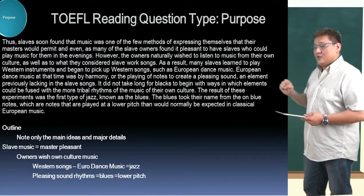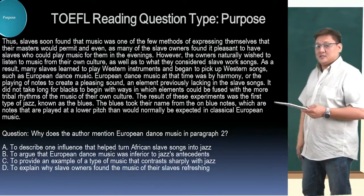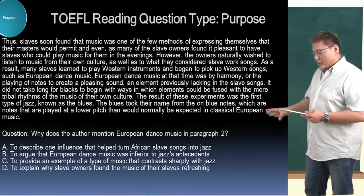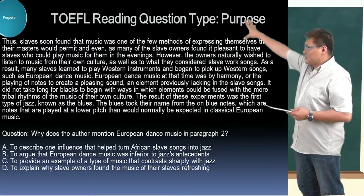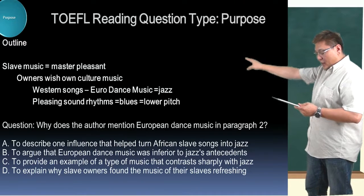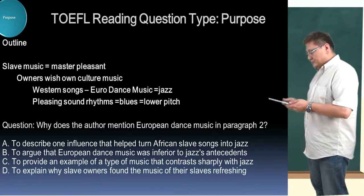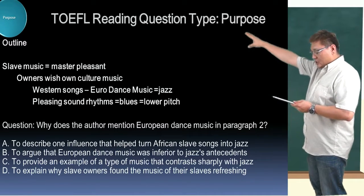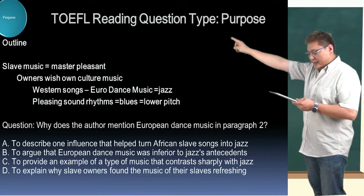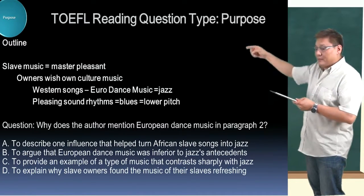Now you have your notes. The original reading and the question look like this. We're going to go back and take a look at your notes — the outline. This is what your paper should look like. The question is: why does the author mention European dance music in paragraph two? If you take a look at your notes, where do you find European dance music? Right there. And what does it equal before it? Western songs — owners wished their own culture's music. So the answer should be right above it.